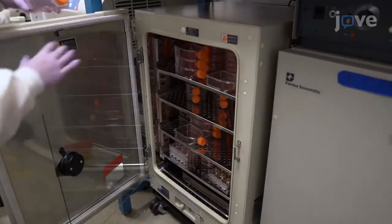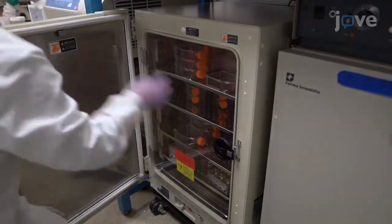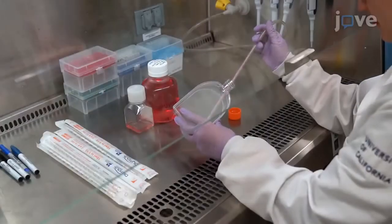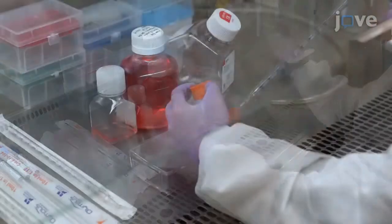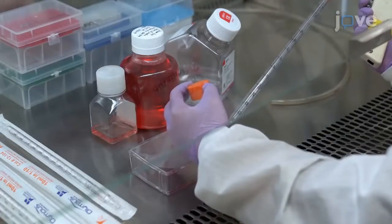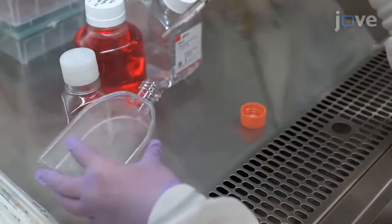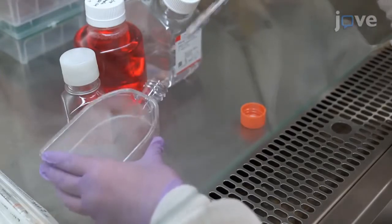Retrieve the tumor cell and transfer it into the tissue culture hood. Aspirate the medium and wash the cells with 10ml of PBS. Then add 2ml of cell detachment solution to the flask.